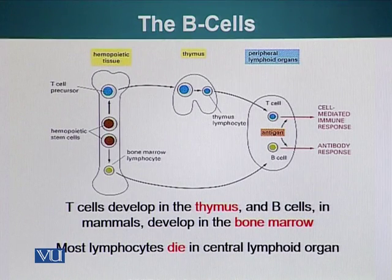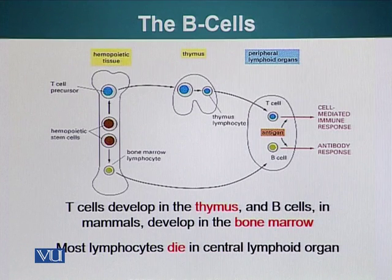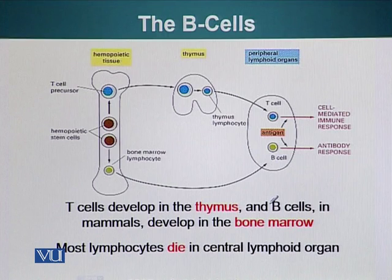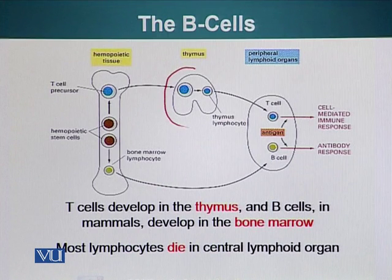The reason where the terms T cells and B cells come from is basically the site at which these cells mature. T cells, after they have been produced by the bone marrow by the cells which reside in the bone, migrate to the thymus — and this is where T cells mature.